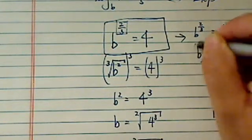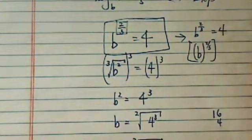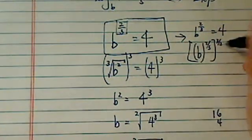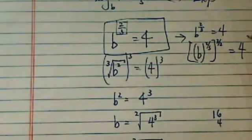Then b to the 3rd, if this whole thing times 3 over 2, then 4, 3 over 2.